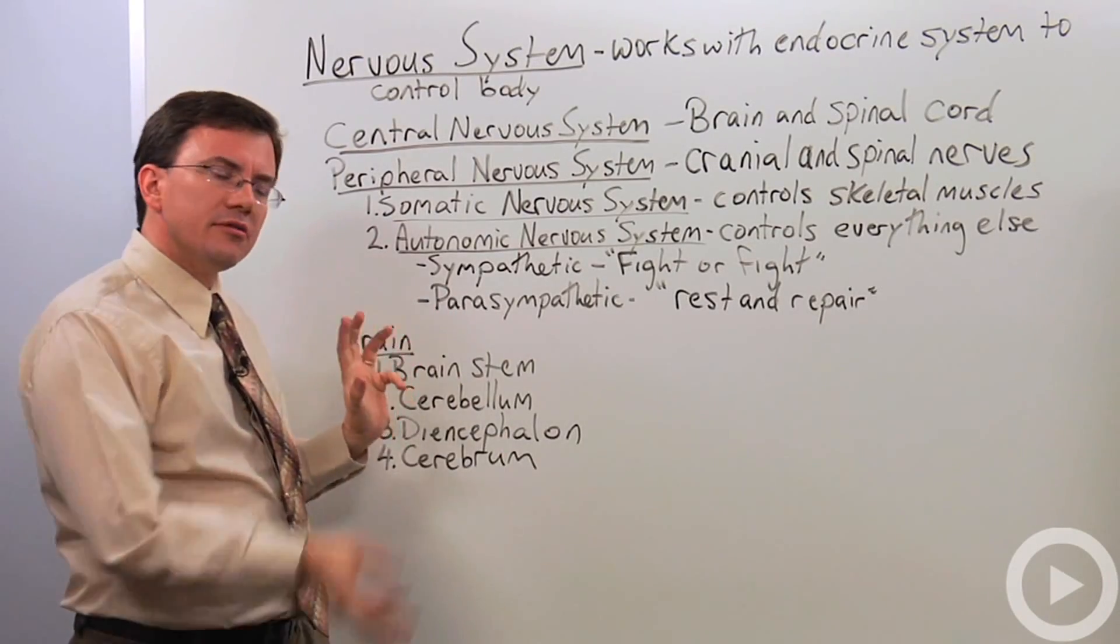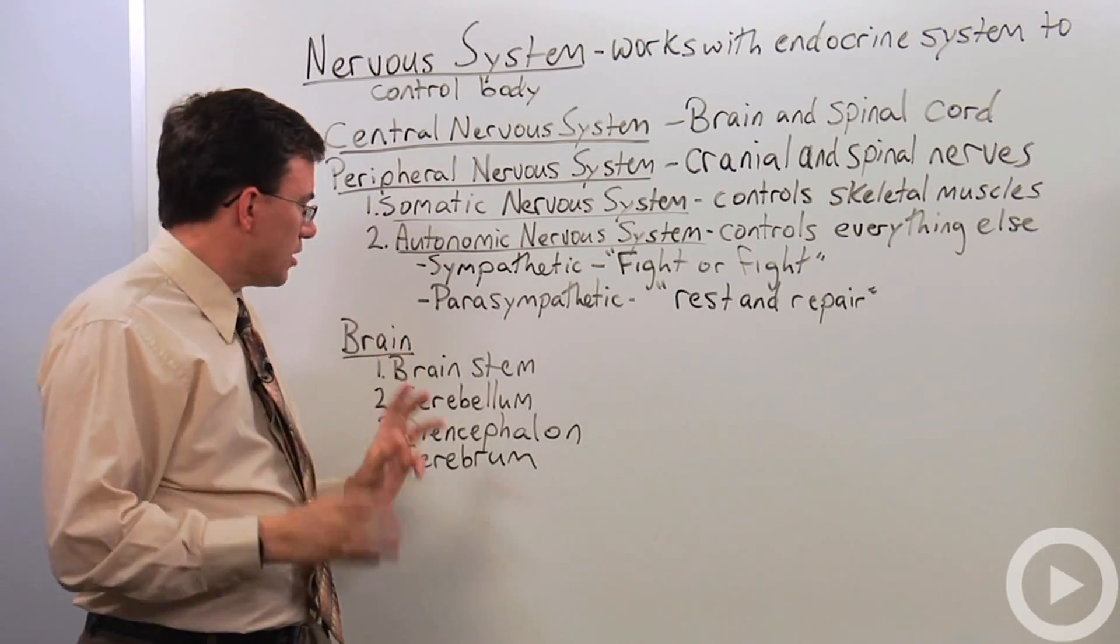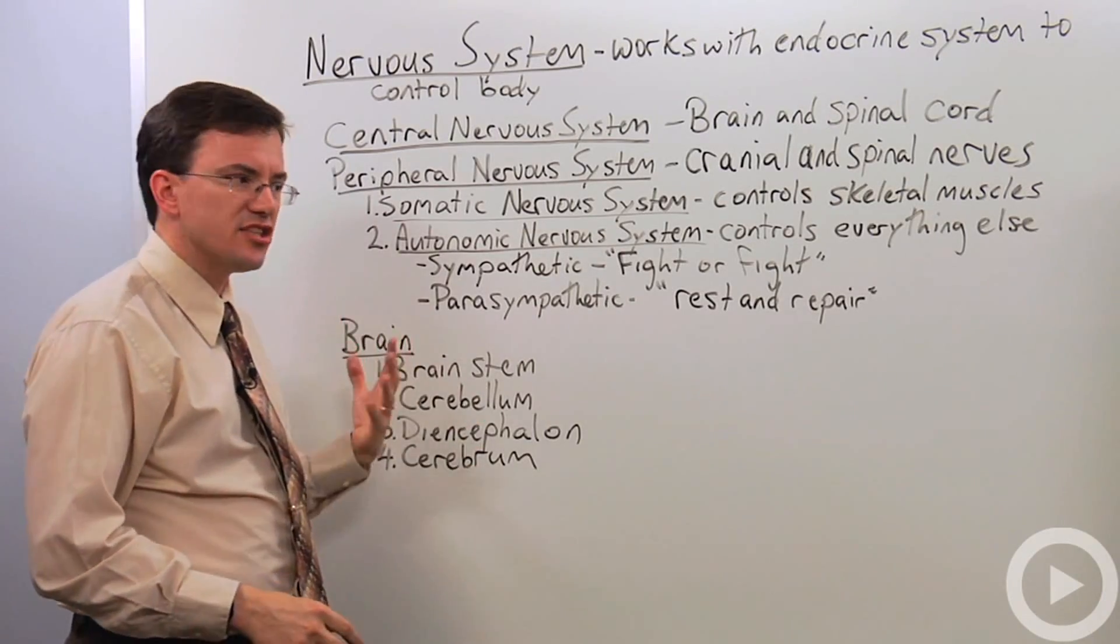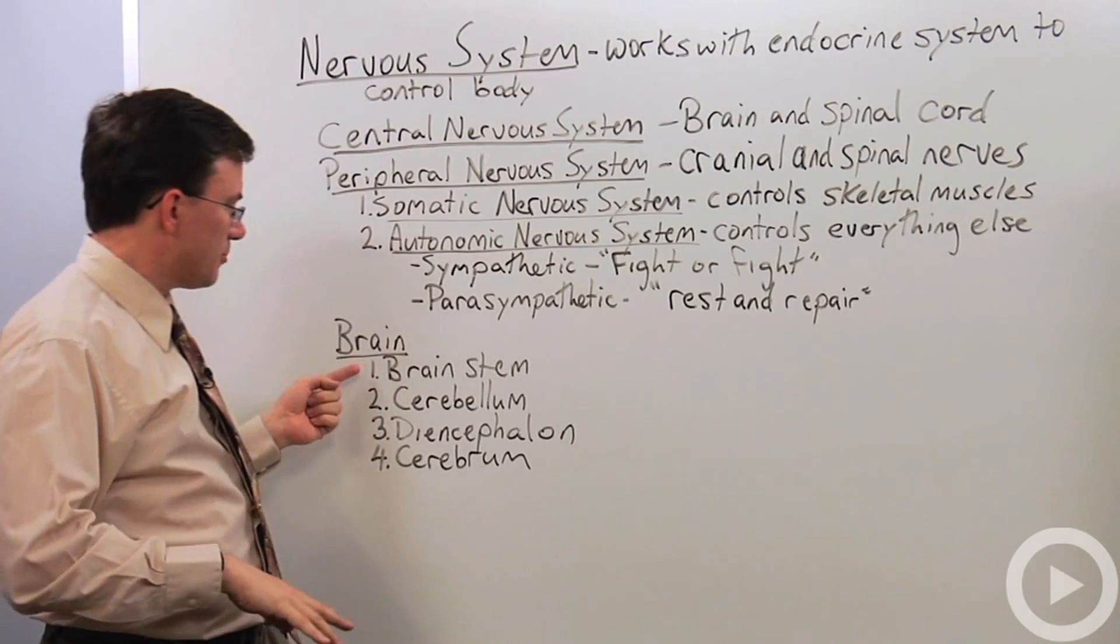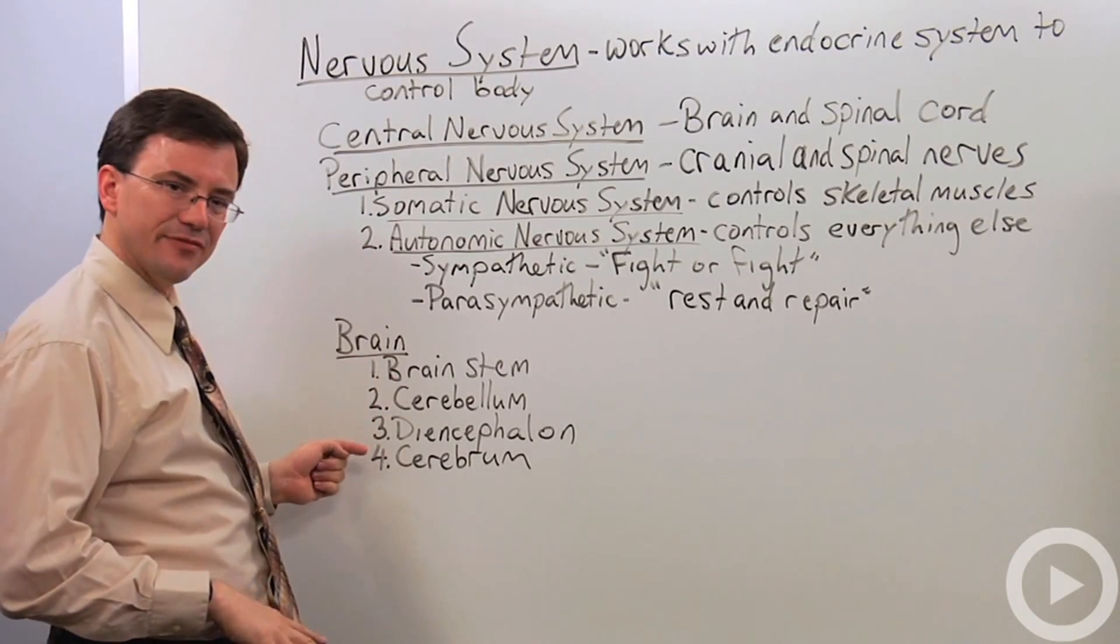All right. Now I could go through the structures of the spinal column or spinal cord, but what most people want to know about is the brain. So let's take a look at the brain. There's four major regions of the brain. The brainstem, cerebellum, diencephalon, and cerebrum.